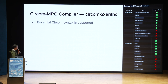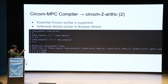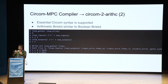With this CIRCOM MPC compiler, most of the essential CIRCOM syntax is supported. We have what we call arithmetic Bristol format, which is very similar to Boolean Bristol format — we are just replacing Boolean wires with arithmetic wires. Also recently, last week, we added output of Bristol Fashion format, so we can run directly with some garbled circuit Boolean-based backend without needing to do decomposition — it's even more convenient.